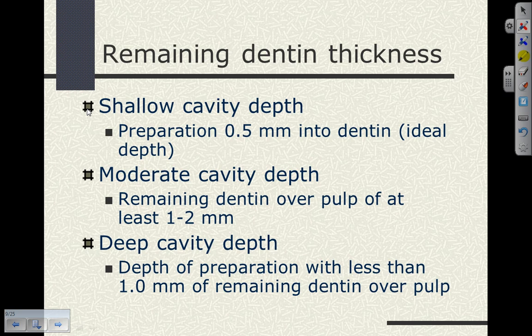A moderate cavity preparation means we have dentin over the pulp of between one and two millimeters. We make that judgment based upon a bitewing radiograph, not a periapical radiograph. A deep cavity preparation means the preparation extends with less than a millimeter of dentin remaining over the pulp. Keep in mind, older patients have reactive reparative dentin formed — the pulp chamber is becoming smaller — so depth is measured relative to the pulp itself, not just the cavosurface margin.